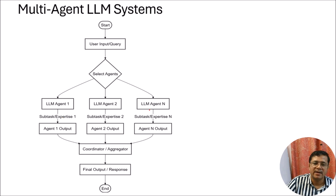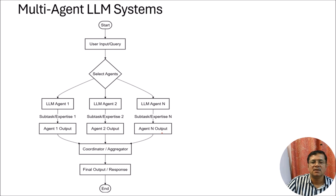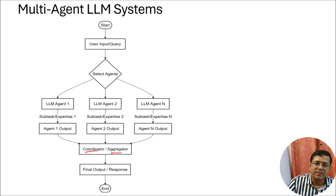Here we have N agents, so there will be N different types of tasks they can perform. Once we provide the input query to the LLM agents, they generate outputs. The next part is to organize all those outputs, and for that we use a coordinator or aggregator. This coordinator or aggregator depends upon the functionality requirements of your task, and finally it generates the final output or response.